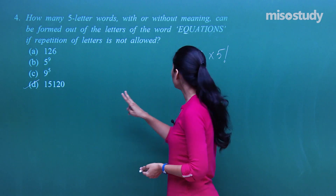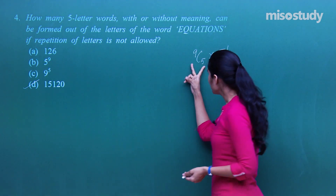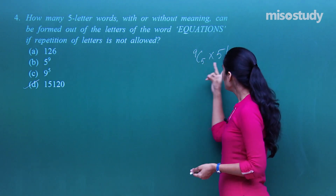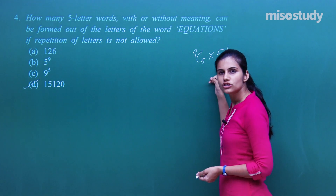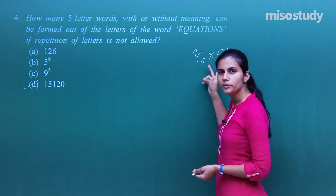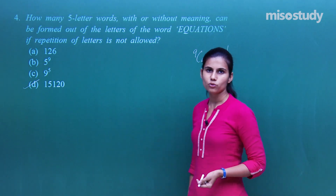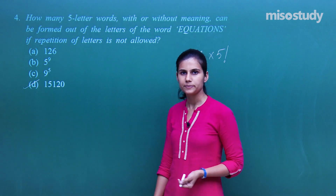Two jobs were required: first select 5 letters, then arrange those 5. Since both jobs must be performed, the multiplication rule gives the final answer.